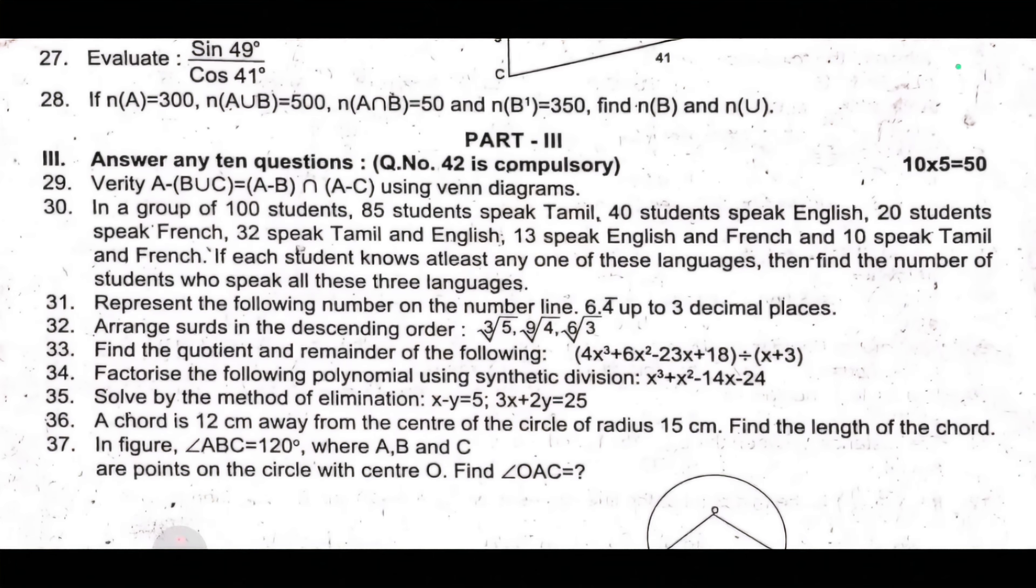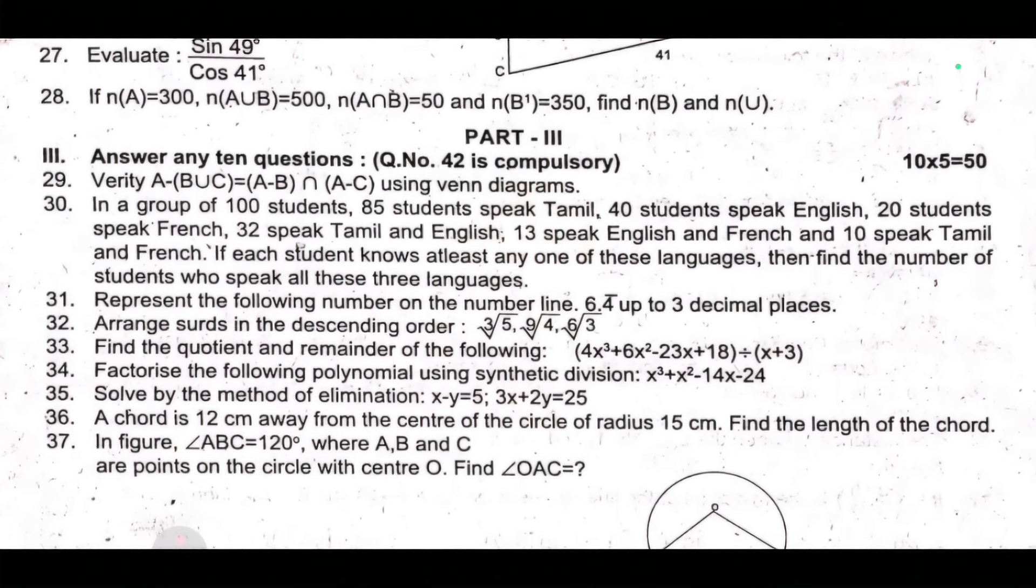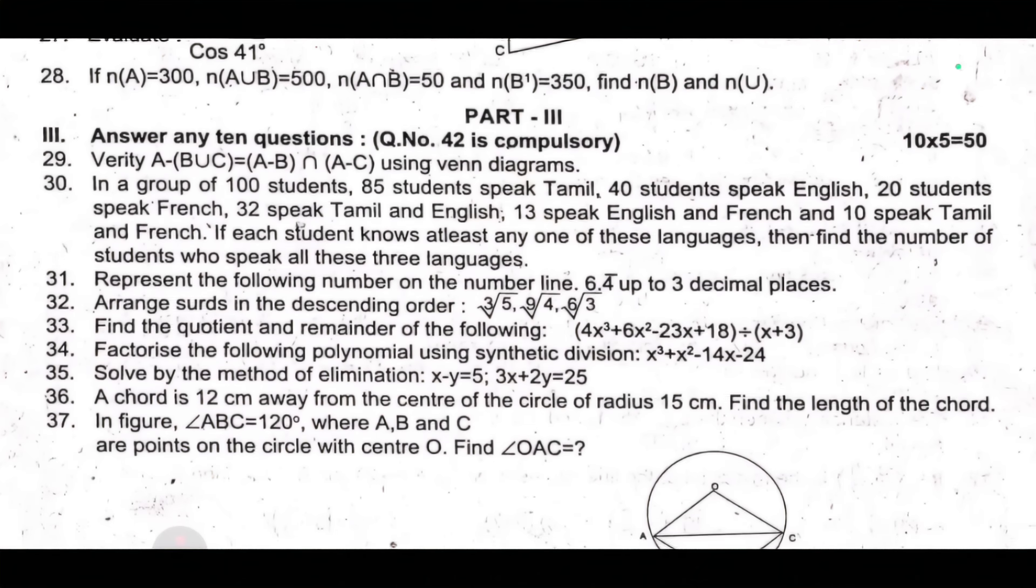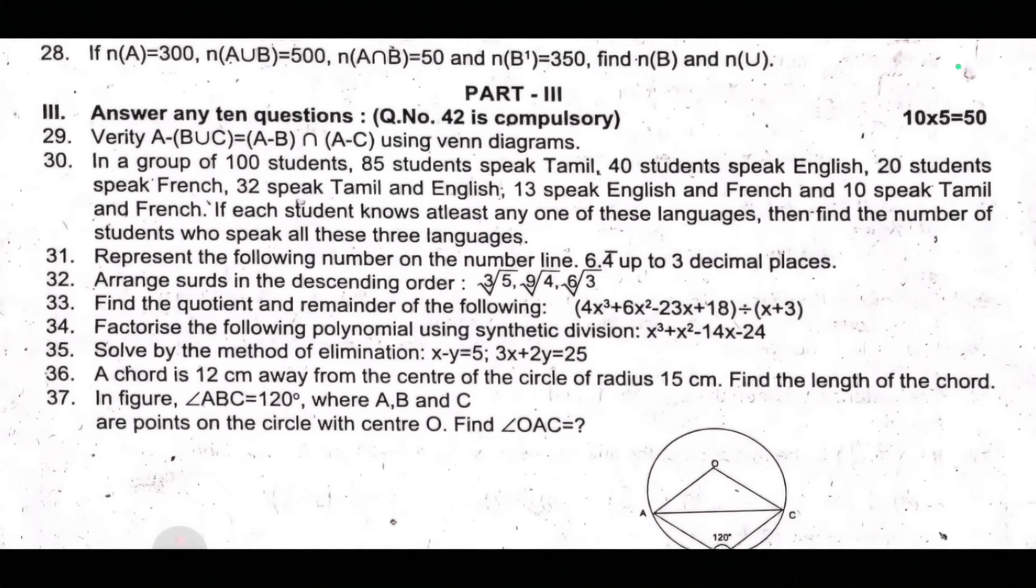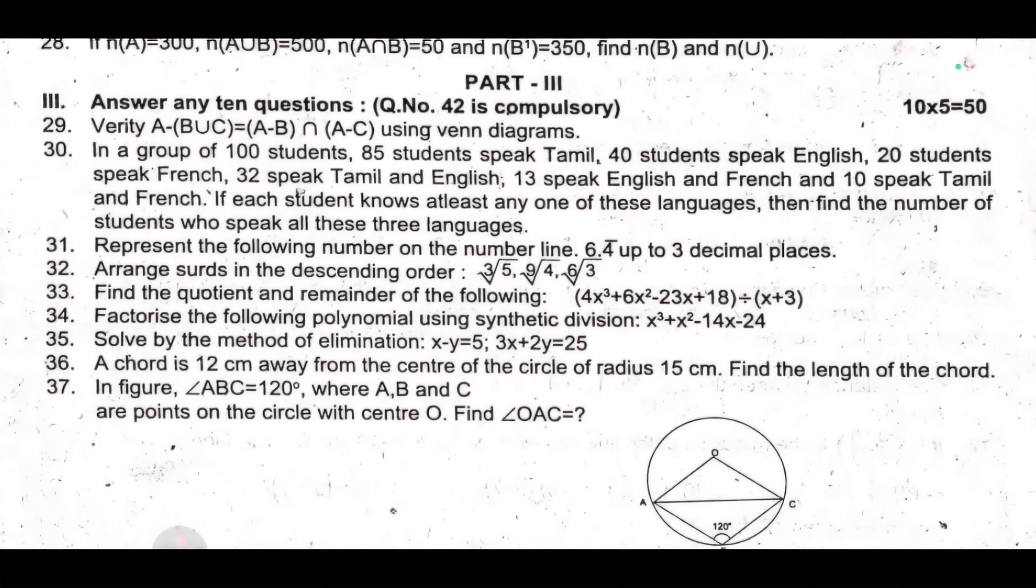Thirty-fourth, factorize the following polynomial using synthetic division: x³ plus x² minus 14x minus 24. Thirty-fifth, solve by the method of elimination: x minus y equal to 5, 3x plus 2y equal to 25. Thirty-sixth, a chord is 12 cm away from the center of the circle of radius 15 cm, find the length of the chord.